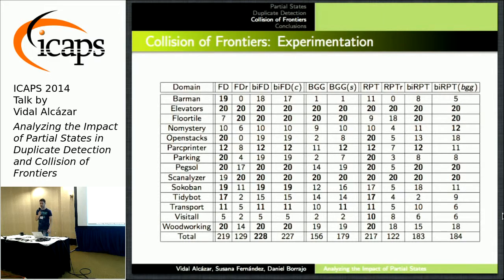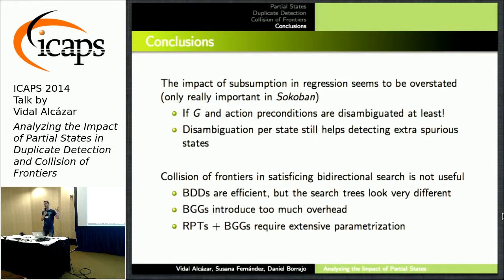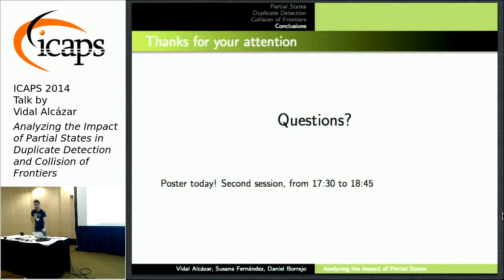Essentially, the conclusions are that subsumed states are kind of overstated as a problem, as long as you handle the action conditions correctly. The collision of frontiers is a really complex problem. Front-to-back heuristics seem hopeless for the most part. BGGs have a lot of overhead and additional issues such as H values becoming obsolete in the open list. Random planning trees look more promising but require extensive parameterization and experimentation. You're welcome to come to the poster this evening.